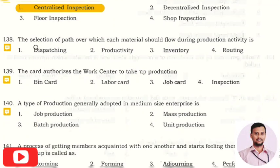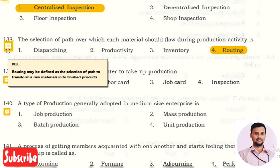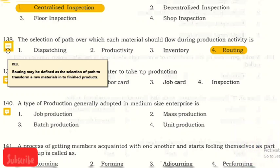The next question is: the selection of a path over which each material should flow during the production activity? The right answer is option four, routing. What is this routing? Routing may be defined as the selection of a path to transfer raw material to finished goods. It is nothing but a flow chart of work what should be carried in the production activities.